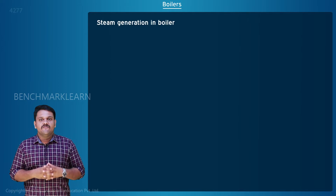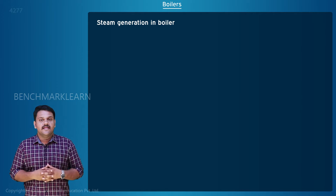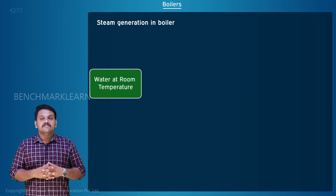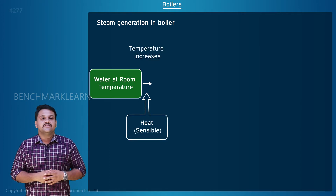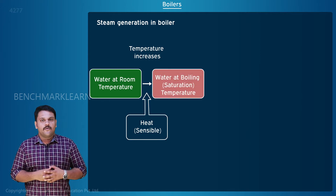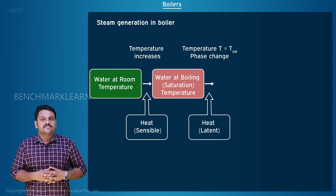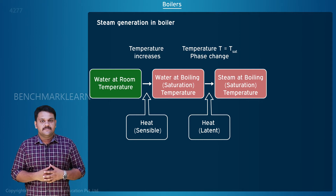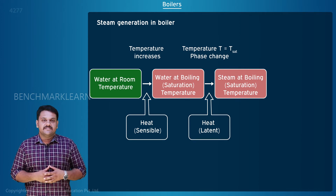The chemical energy of a fuel such as coal is converted into heat energy when it is burnt in a furnace. Using this heat energy, water supplied at room temperature is heated. The temperature and the internal energy of water increases and the water reaches its boiling point. Then the water is converted to steam without any temperature rise. This temperature is called the saturation temperature, which is the same as the boiling point temperature.